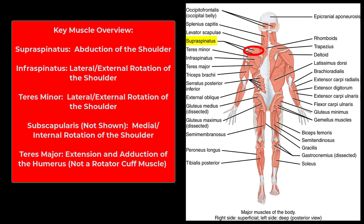The infraspinatus is below the spine of the scapula; its job is lateral or external rotation, along with the teres minor, which also performs external rotation. The subscapularis is on the anterior surface of the scapula and performs medial rotation — golfers often have problems with this muscle. So the rotator cuff is: supraspinatus, infraspinatus, teres minor, and subscapularis. The teres major, meanwhile, extends and adducts the shoulder — same actions as the latissimus dorsi.